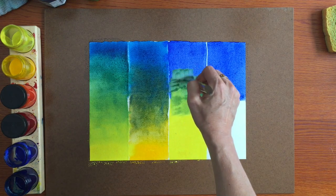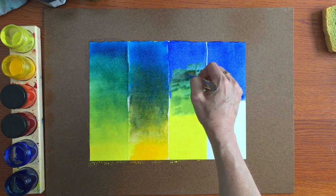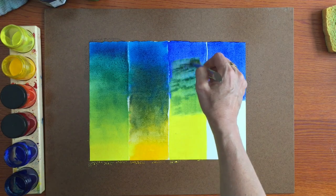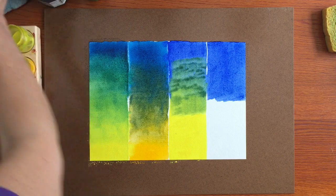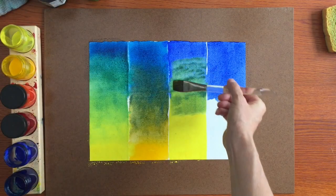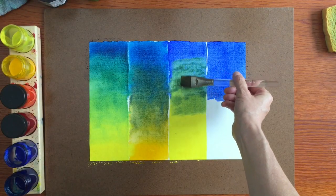But the color itself is a little bit more on the mossy side because you have the warmth in the ultramarine blue that brings a little softness to the green.